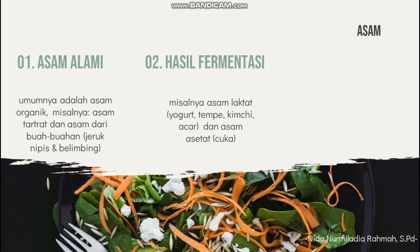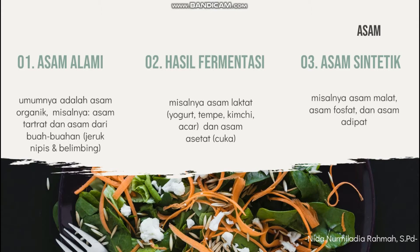Selain asam laktat, asam asetat seperti cuka juga bisa digunakan untuk mengawetkan makanan. Yang ketiga itu asam sintetik atau asam buatan, contohnya seperti asam malat, asam fosfat, dan asam adipat. Di samping sebagai bahan pengawet, asam juga bisa digunakan untuk menambahkan rasa, mengurangi rasa manis, memperbaiki sifat kolodial dari makanan yang mengandung pektin, memperbaiki tekstur jeli dan selai, membantu ekstraksi pektin dan pigmen dari buah-buahan dan sayuran, serta menaikkan efektivitas benzoat sebagai bahan pengawet.